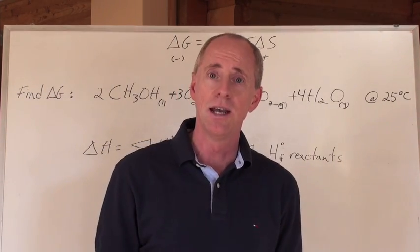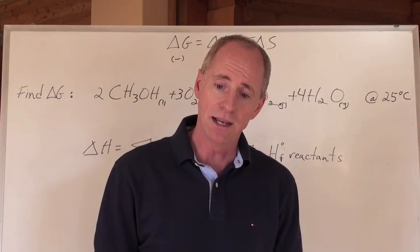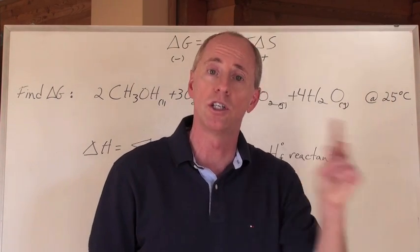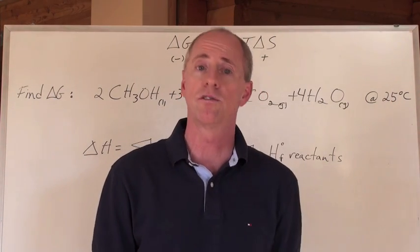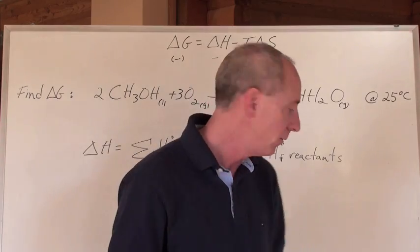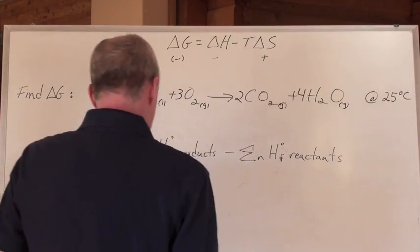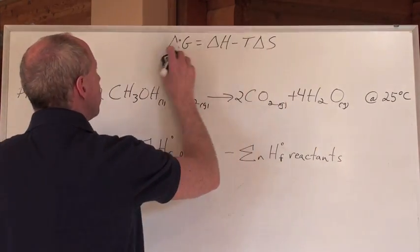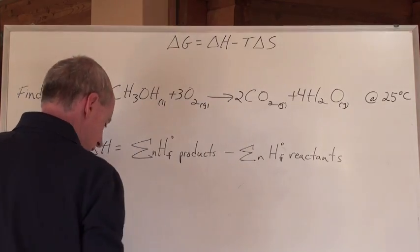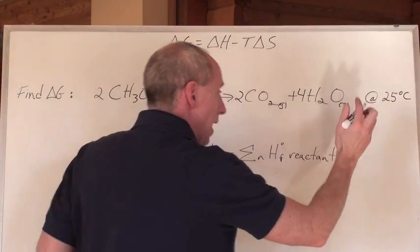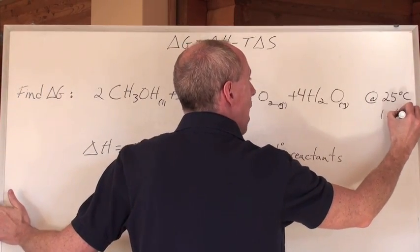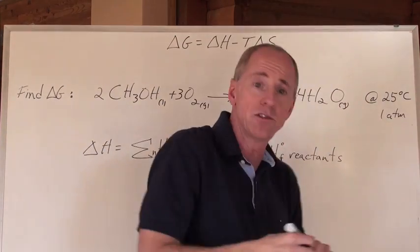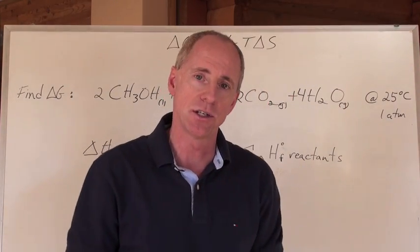But that's not the question — the question is to calculate delta G. It will be negative, but how much free energy comes off to do useful work from this reaction? Since it's at 25 degrees Celsius and one atmosphere of pressure, the entire reaction is occurring under standard conditions.